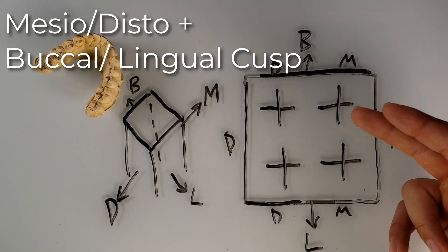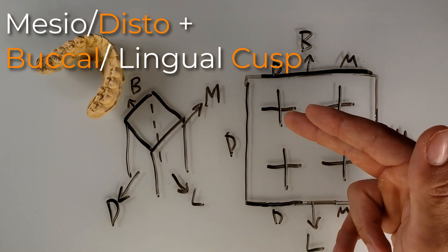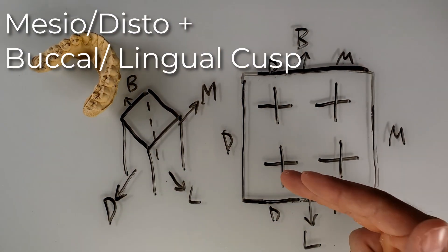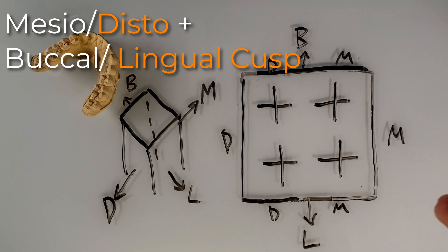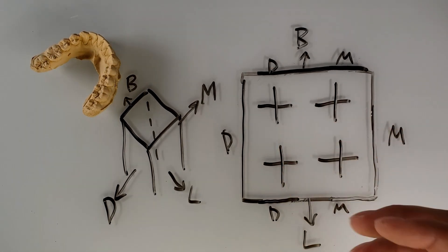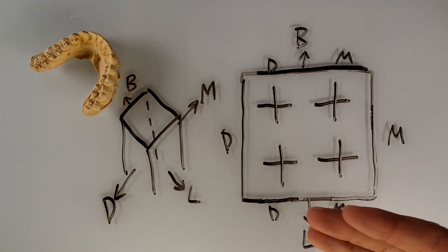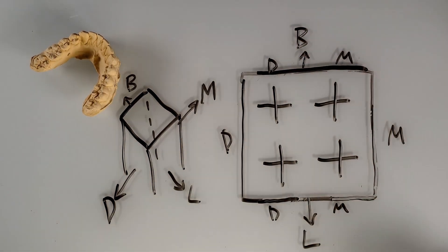So here is the mesial buccal cusp. Here's the disto buccal cusp. Here is the mesial lingual cusp. Here's the disto lingual cusp. You have four cusps on the molars. You use mesial and distal with the appropriate buccal or lingual term to get your cusp.